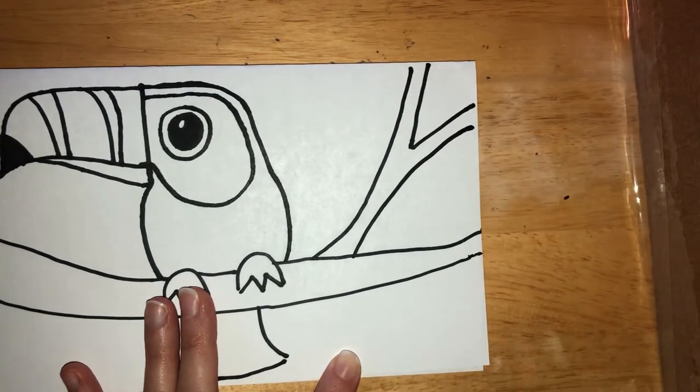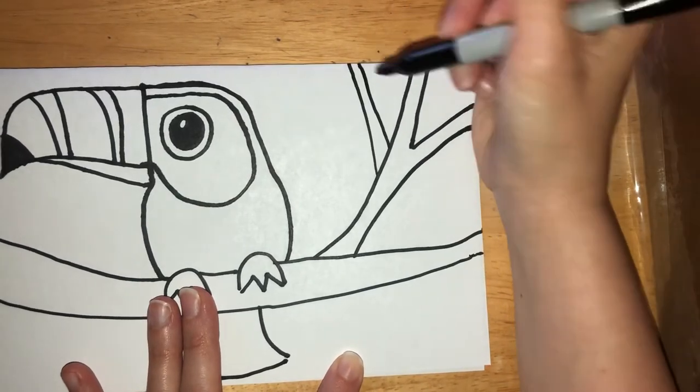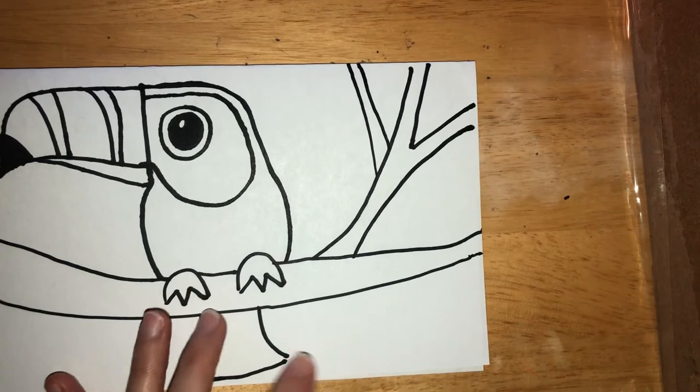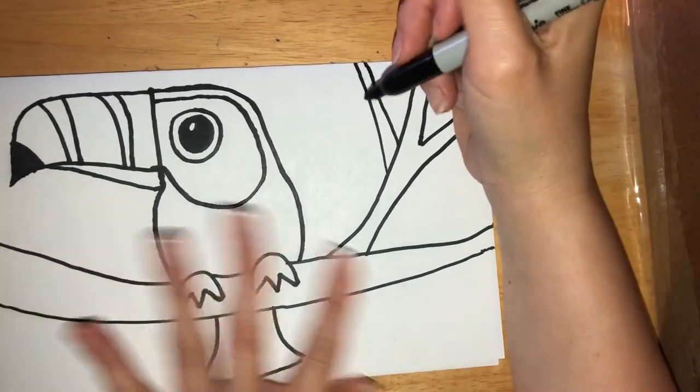Finish off that section. If you want to make another piece of the tree branch here, you can make two lines that come together and we're good. Next we could do the leaves, kind of fill in all that space.